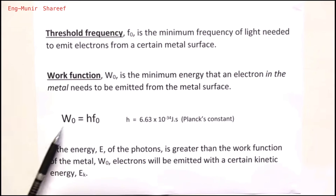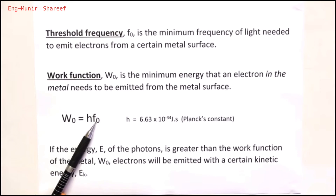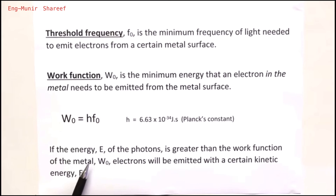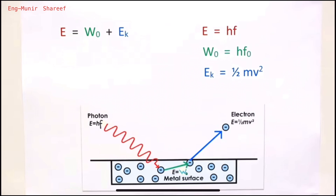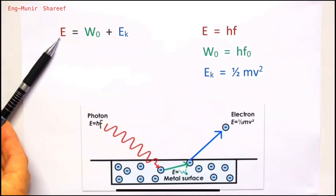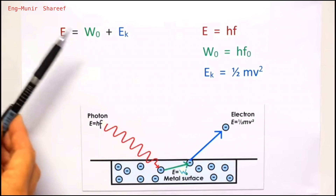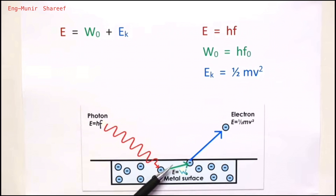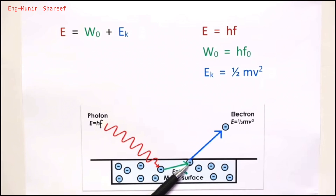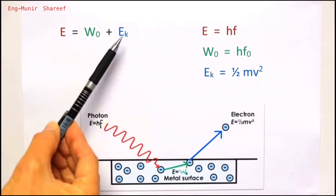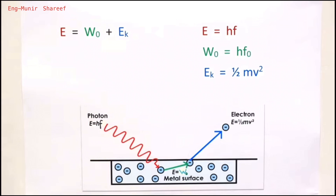To calculate the work function, use Planck's constant times the threshold frequency for that particular metal. Threshold frequency and work function are fixed for each particular metal — they do not change. If the energy of the photons is greater than the work function, electrons will be emitted with a certain kinetic energy. The work function W₀ is the energy needed to move the electron from within the metal to the surface, and any remaining energy becomes the kinetic energy of the ejected electron.